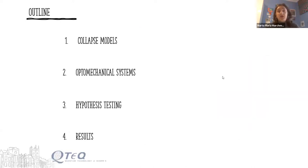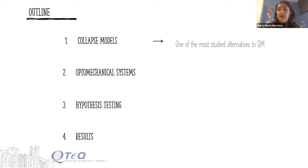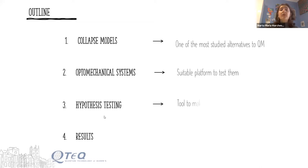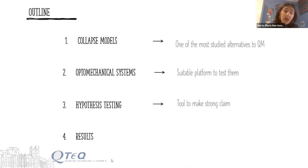This is the outline of the presentation. I will introduce collapse models, which are some of the most studied alternatives to quantum mechanics. I will describe the system we use to study those models — optomechanical cavities, which are a very suitable platform. The third point is a description of the hypothesis testing we performed to infer with high confidence whether collapse models are acting on optomechanical systems, and finally I will show some results.